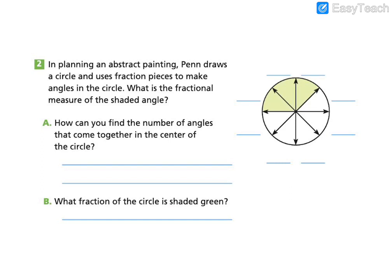How can we find the number of angles that come together in the center of the circle? Well, what do we need to do with our unit angles to find how many there are? We can count them, right? So we can count to find there are eight angles.